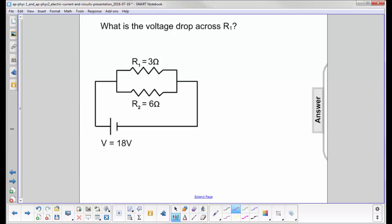What is the voltage drop across R1? Let's look at what the definition of voltage is. Another way to write this would be 18 joules per coulomb.